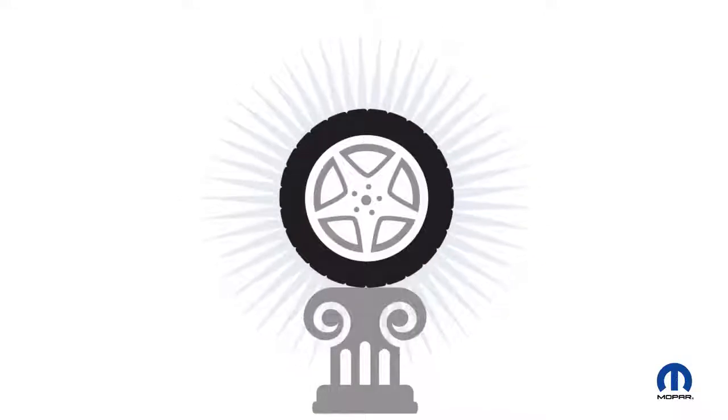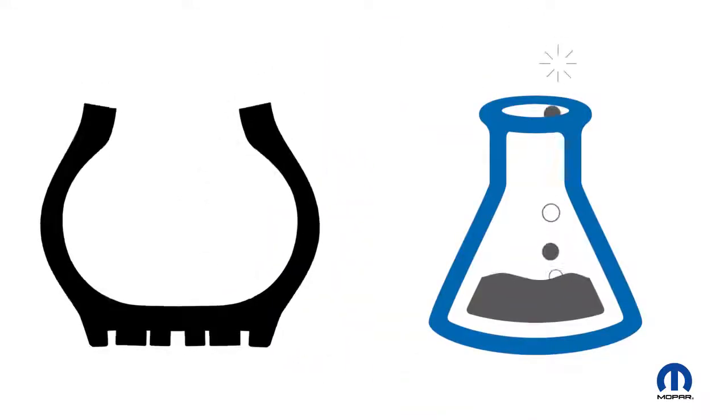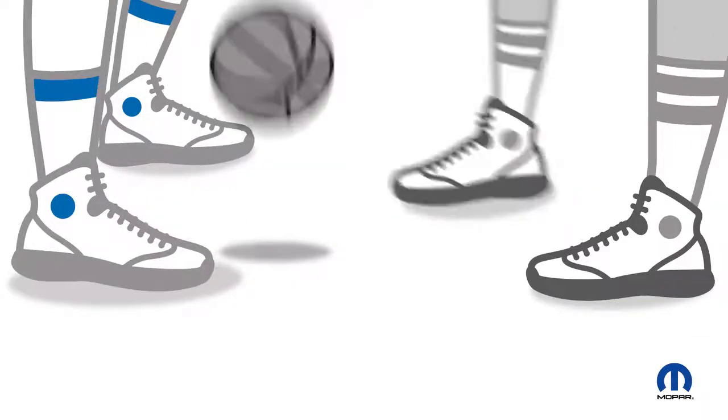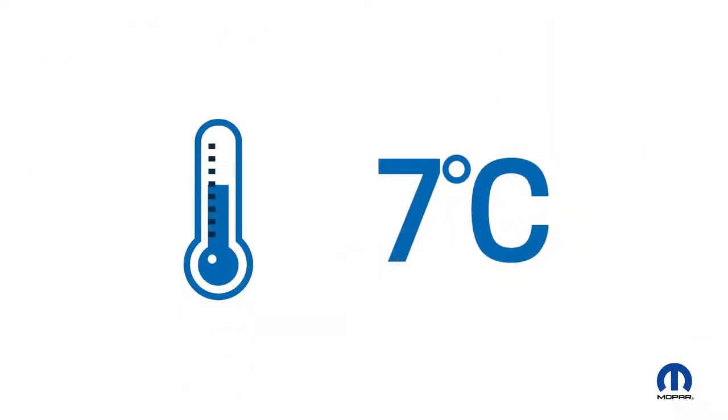The solution? Winter tires. Here are four reasons why. Number one: Softer rubber compounds. Specially formulated to remain more pliable for more grip when temperatures drop to 7 degrees Celsius or lower.